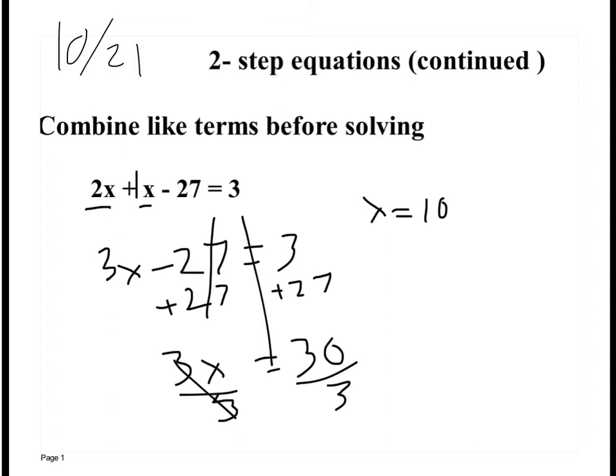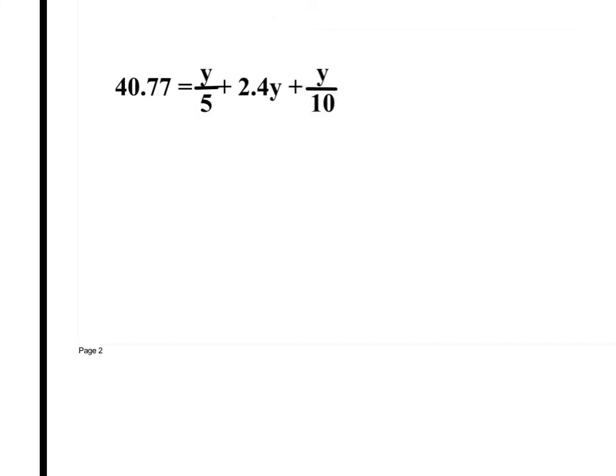x must equal 10. Now you are required to show your work. You're also required to check your work. So plug 10 in for x. 2 times 10 is 20. Plus 10 is 30. 30 minus 27 is 3. So x must equal 10. Any questions on how to do that? Now you will have to do that a few times, where you combine like terms before you can actually solve it.